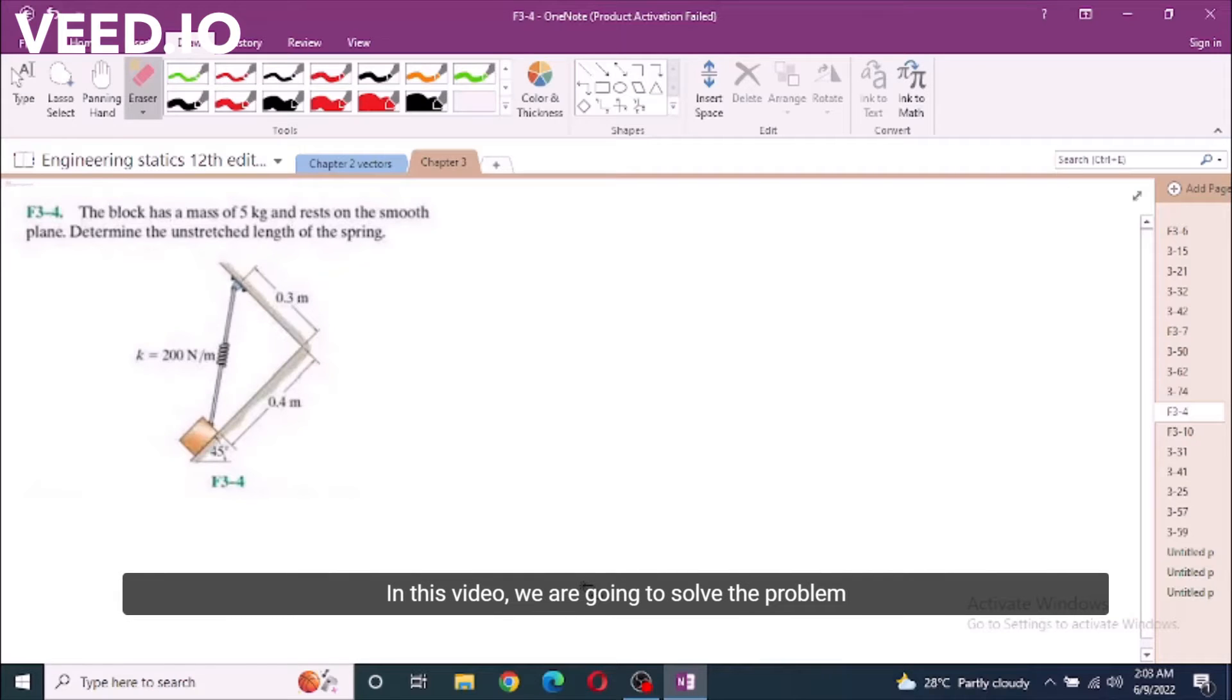In this video, we are going to solve problem F3-4 from R.C. Hibbeler Engineering Statics 12th edition. According to this problem, the block has a mass of 5 kg and rests on the smooth plane. Determine the unstretched length of the spring.